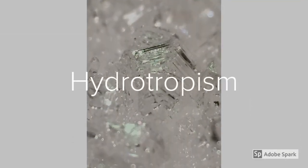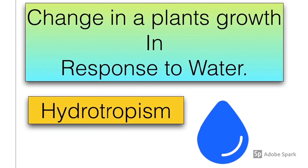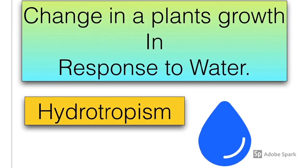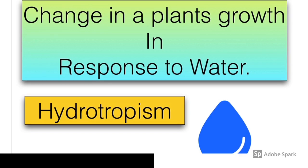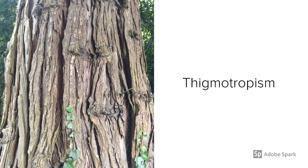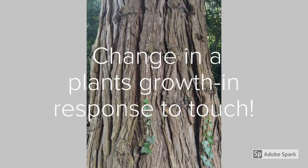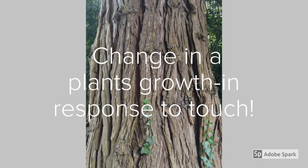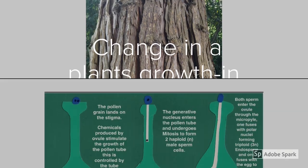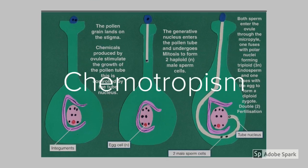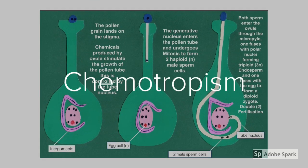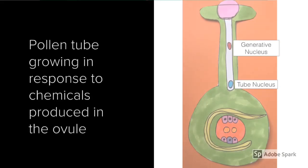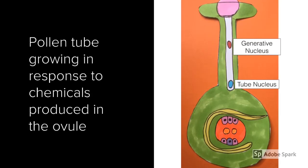The next tropism is hydrotropism — the change in a plant's growth in response to water. The roots are positively hydrotropic; they grow towards water. Another tropism is thigmotropism — the change in a plant's growth in response to touch. Think of ivy growing up a tree. Another example is chemotropism — how a plant changes its growth in response to chemicals. In plant reproduction, the pollen tube grows in response to chemicals produced by the ovule.